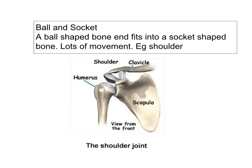The ball and socket joint is where a ball-shaped bone fits into a socket-shaped bone, and you get lots of movement here. For example, the shoulder and the hip joint.